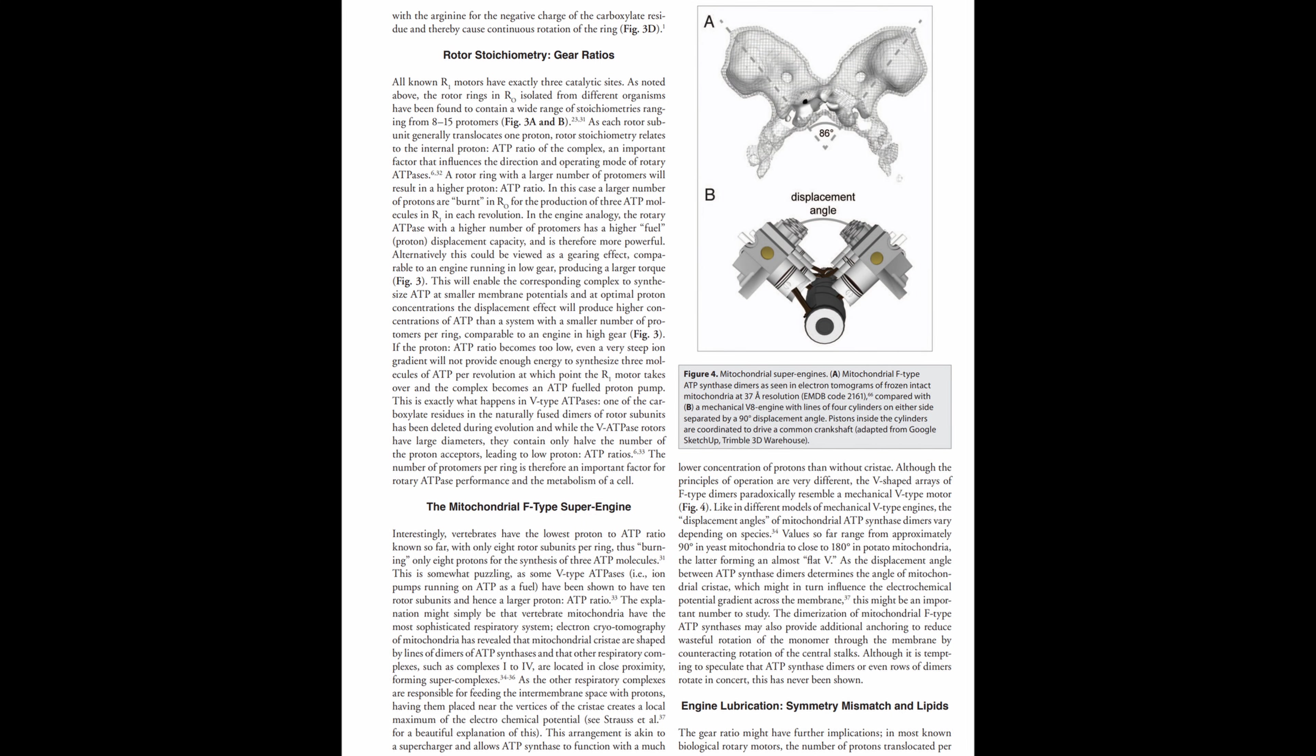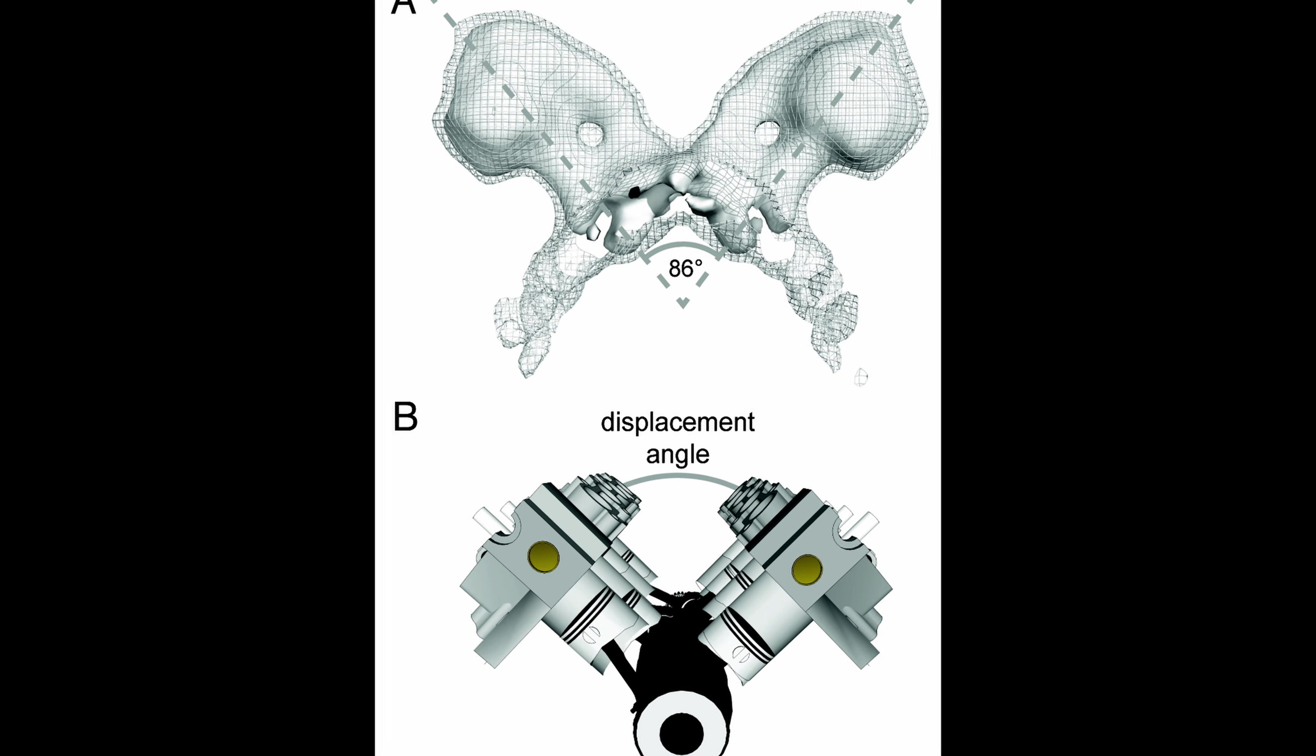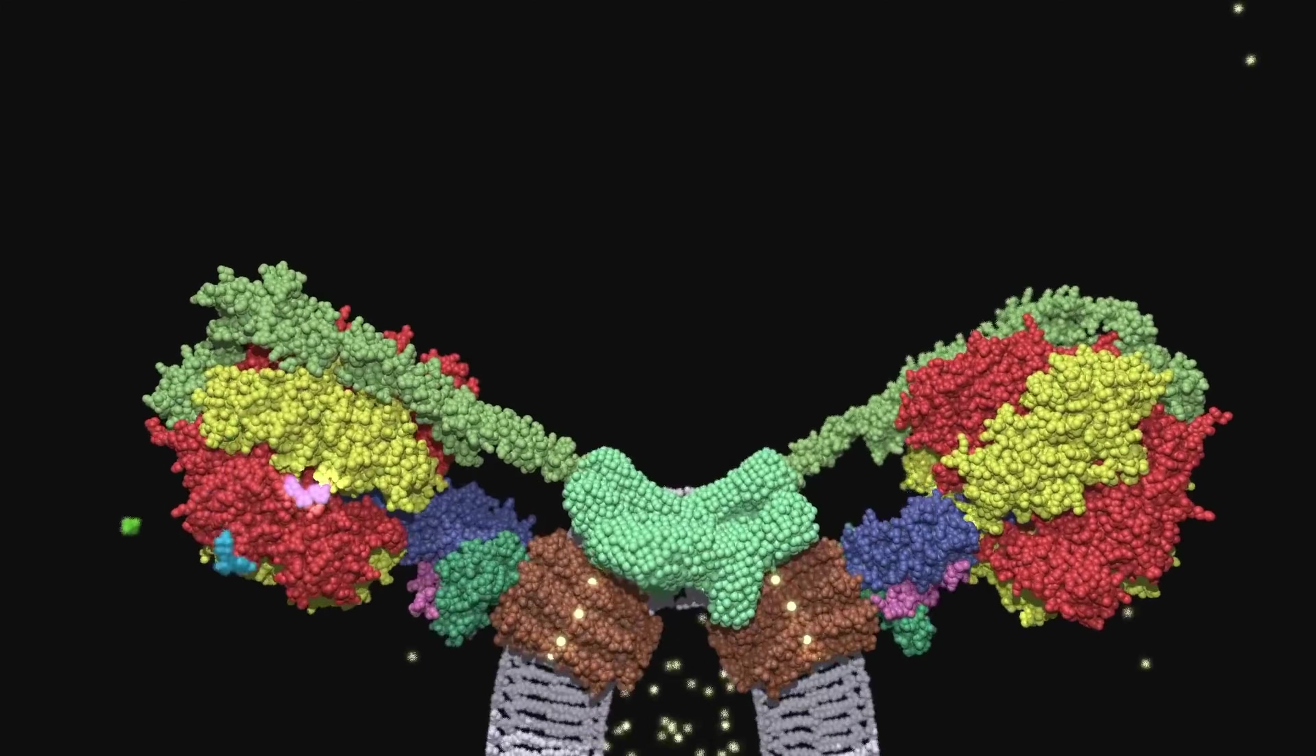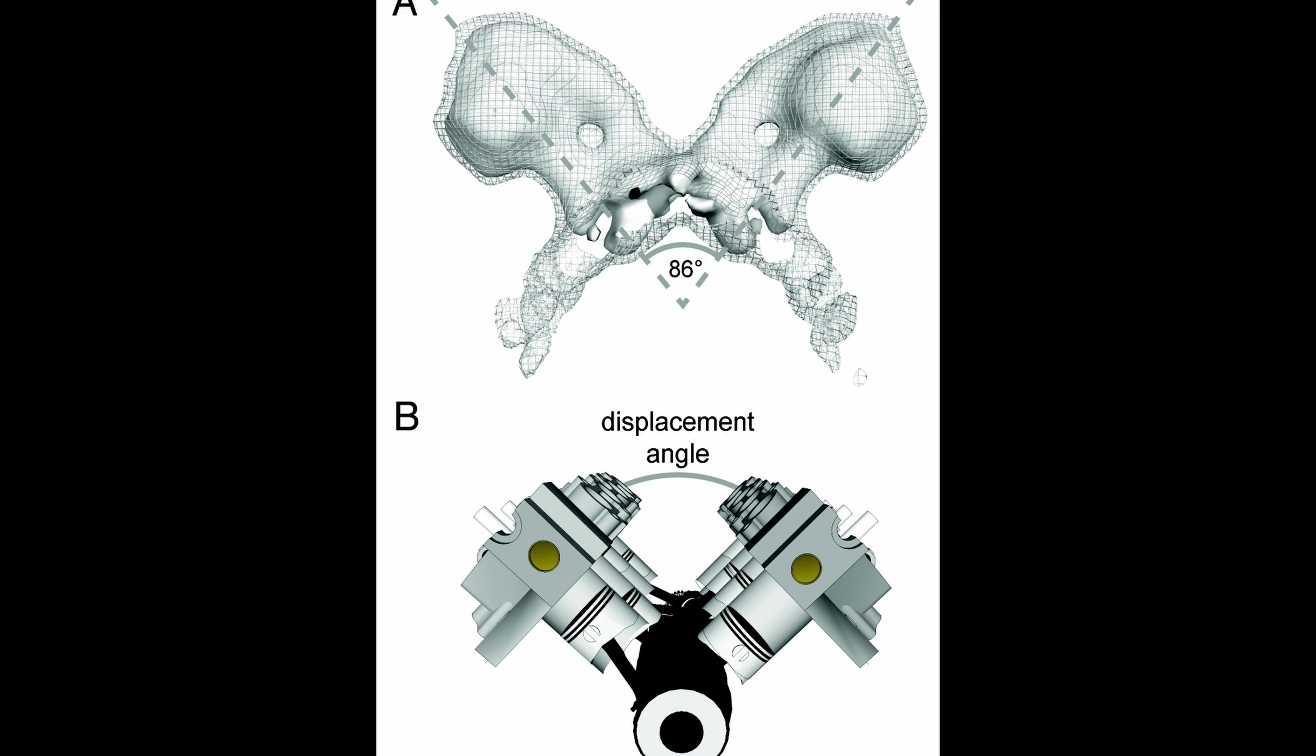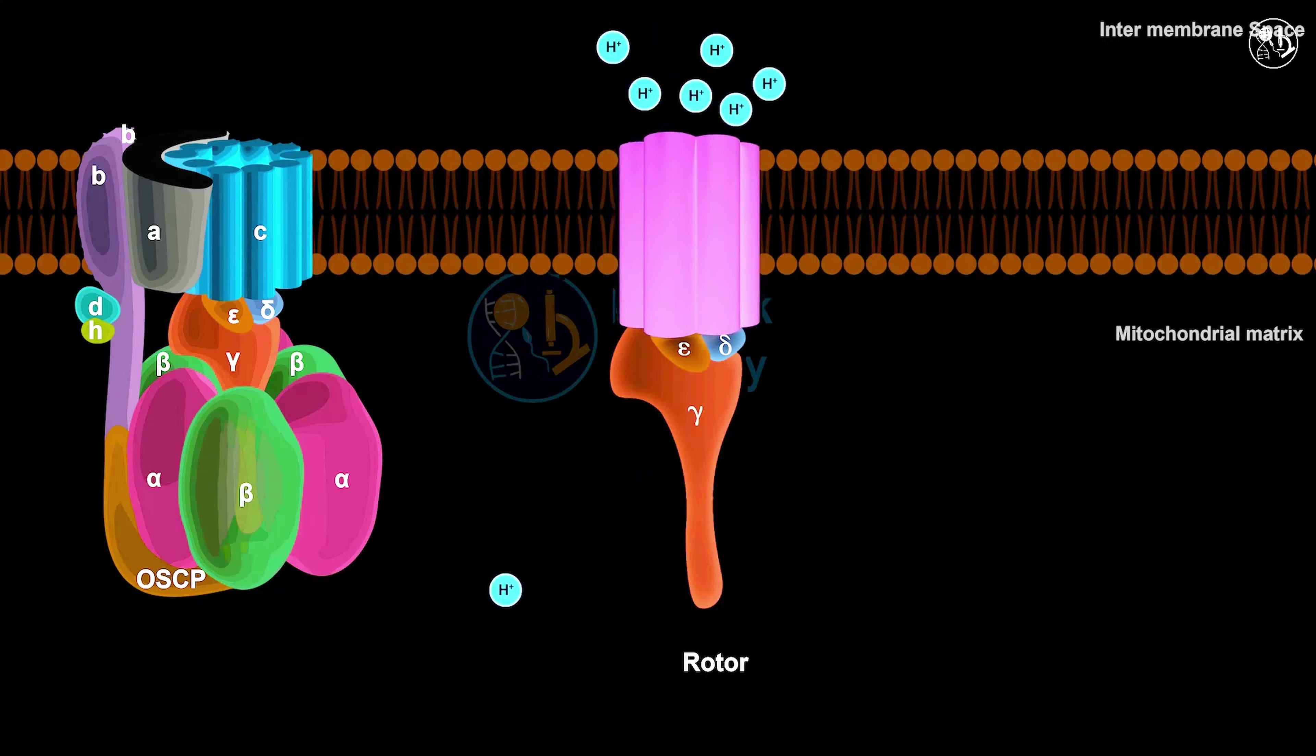In this article, there is an electron tomography image of ATP synthase dimers. In the image, the ATP synthase duo is compared with an eight-cylinder engine. When compared to a mechanical V8 engine, it is noticeable that there is a similar angle design that will drive the crankshaft on both sides. The central protein stock resembles the crankshaft of an internal combustion engine, which is pushed by pistons.